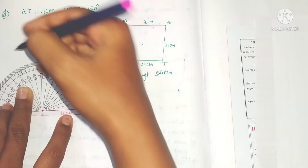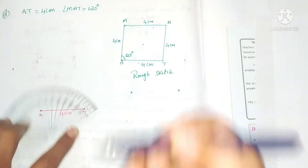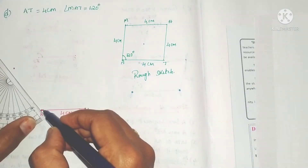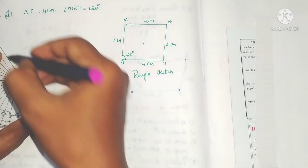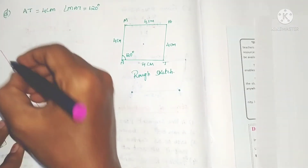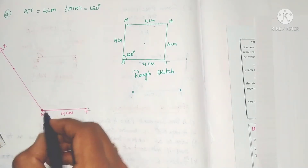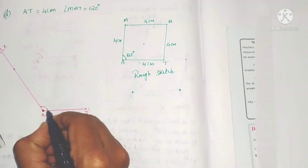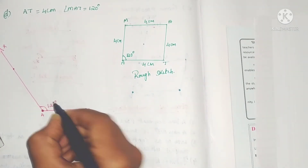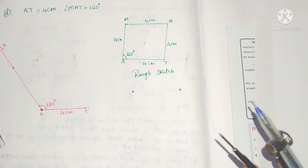Mark 120 degrees on the downscale and draw a ray. This gives us the 120-degree angle. Now take the compass set to 4 centimeters, since all sides are equal.